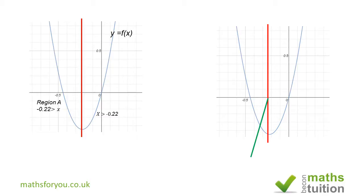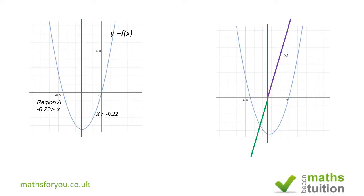For x values greater than -0.22, as x increases the y values also increase. That being the case, the y values for the graph of the derivative will be positive. The points form a straight line A-O-C, and that is the graph of the derivative of the parabola.